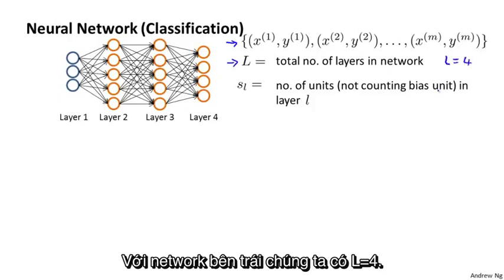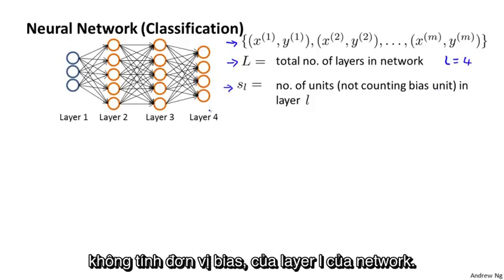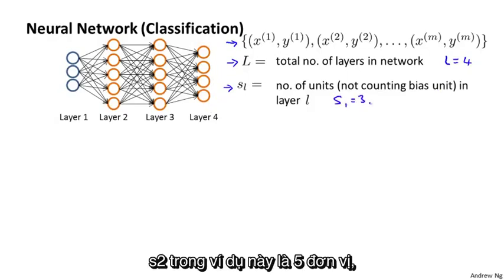And I'm going to use s subscript l to denote the number of units, that is the number of neurons not counting the bias unit in layer l of the network. So for example, we would have s_1, which is the input layer, equals three units.